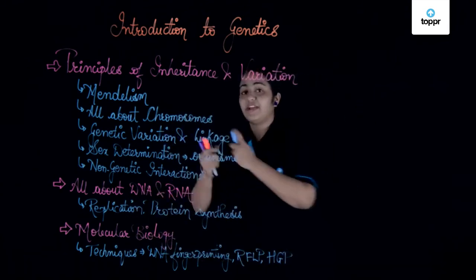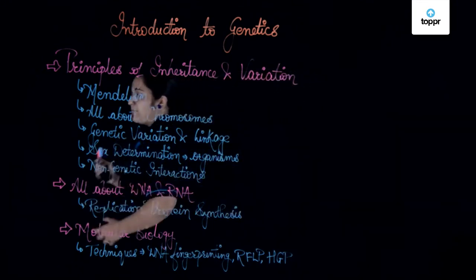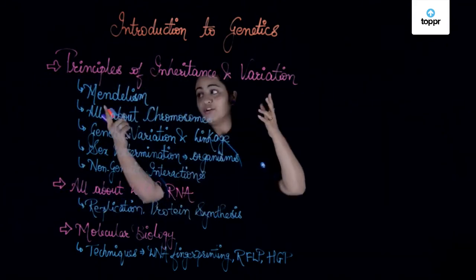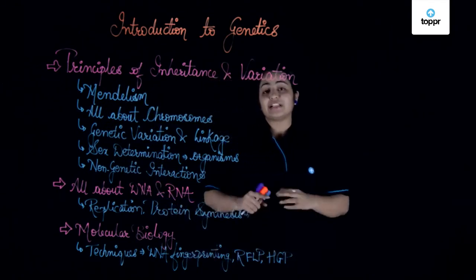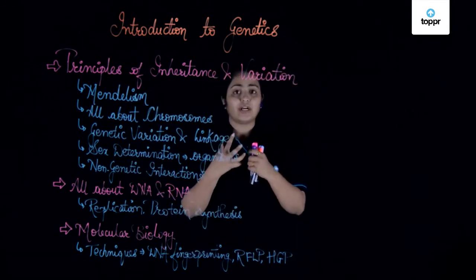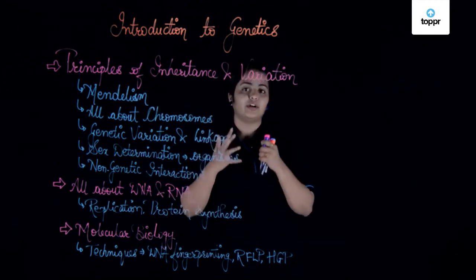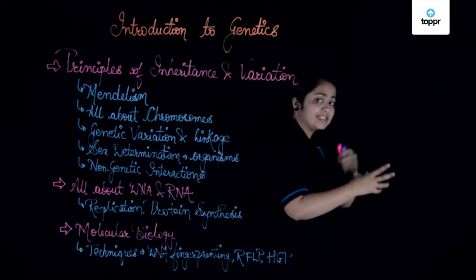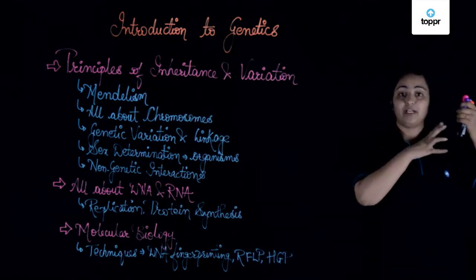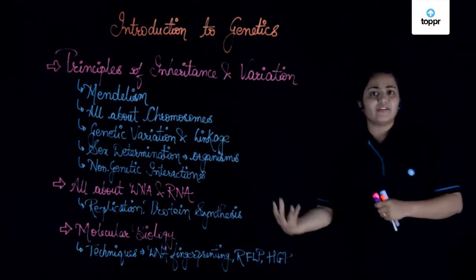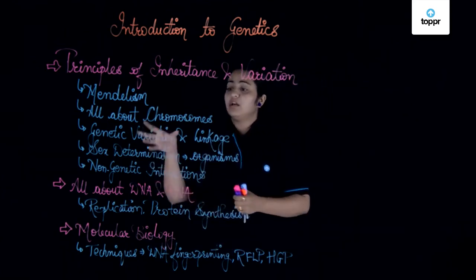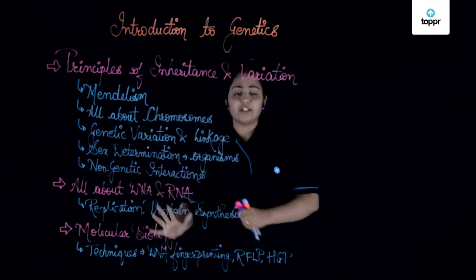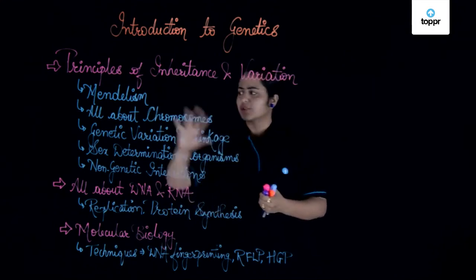All these are the concepts we are going to learn in this complete unit of genetics. We'll be learning about genetics from the time it was invented — from the time of Gregor Mendel — to all the advanced techniques we have today. We'll start with how Gregor Mendel invented all the laws and discovered everything related to genetics. Then we talk about the structure of chromosomes in other organisms, sex determination, genetic variation, all the non-allelic interactions, and linkage and crossover in chromosomes.